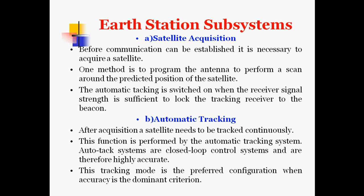Automatic tracking is switched on when the received signal strength is sufficient to lock the tracking receiver to the beacon. After acquisition, the satellite needs to be tracked continuously. This tracking function is performed by the automatic tracking system, which uses closed-loop control systems and is therefore highly accurate. This tracking mode is the preferred configuration when accuracy is the dominant criteria.